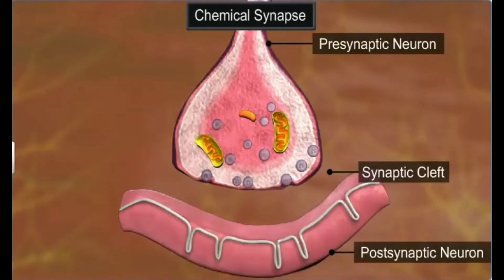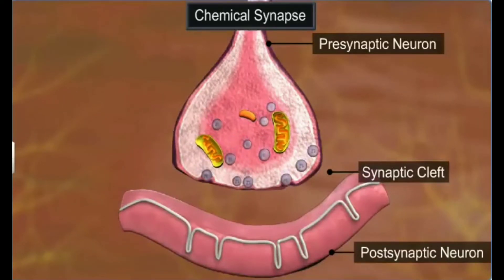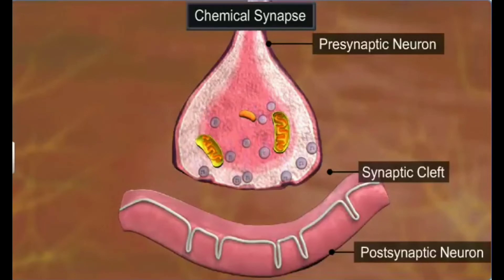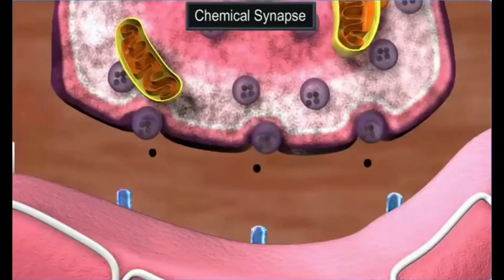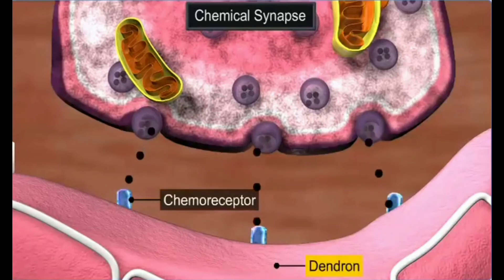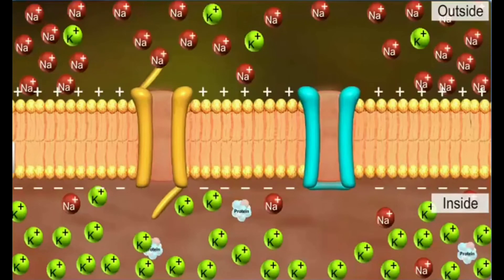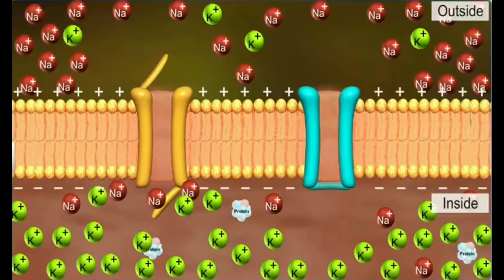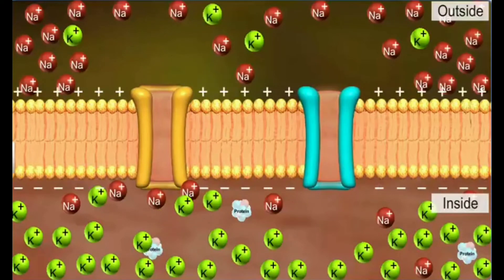When an impulse or action potential arrives at the axon terminal, it stimulates the movement of synaptic vesicles towards the pre-synaptic membrane. The synaptic vesicles fuse with the plasma membrane and release the neurotransmitters into the synaptic cleft. The neurotransmitters thus released bind to the synaptic chemoreceptors present on the post-synaptic membrane of the dendron. This binding opens the sodium ion channels, allowing the entry of ions to generate a new potential in the post-synaptic neuron.